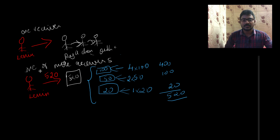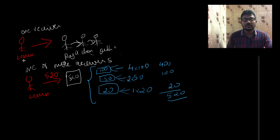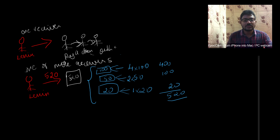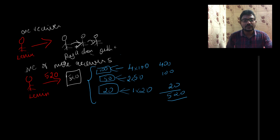For the first category, consider a quiz competition where Lenin is the host and Raja, Chanchu, and Sudha are competitors. Lenin asks a question to Raja; if Raja doesn't know the answer, he forwards the question to Chanchu. If Chanchu doesn't know either, he forwards it to Sudha. This illustrates one receiver passing the request along the chain when unable to handle it.